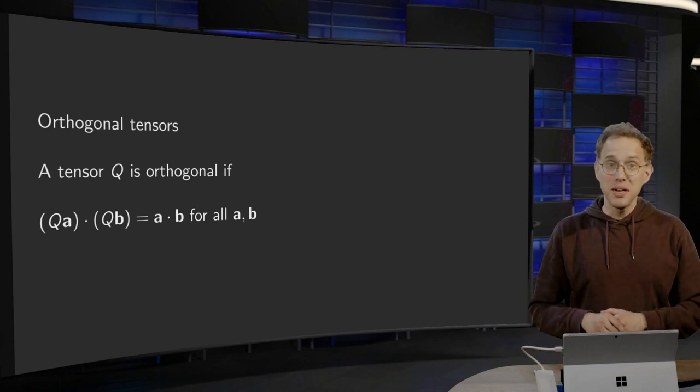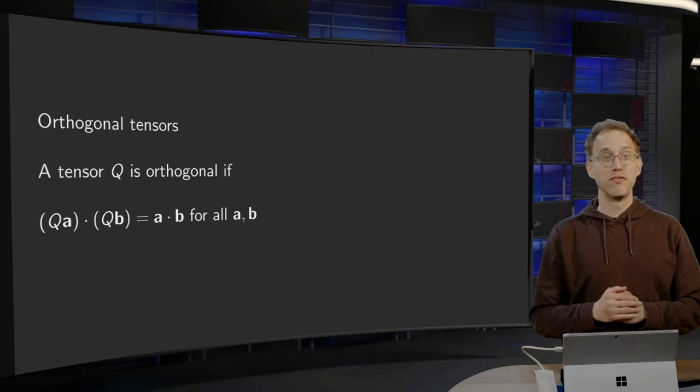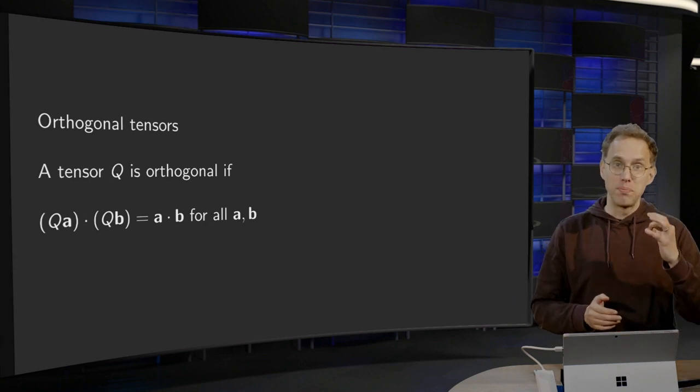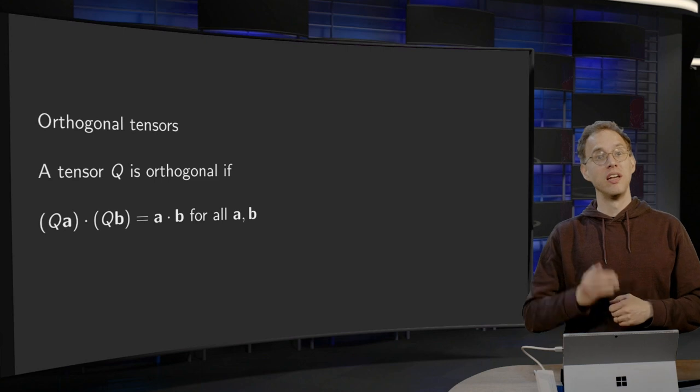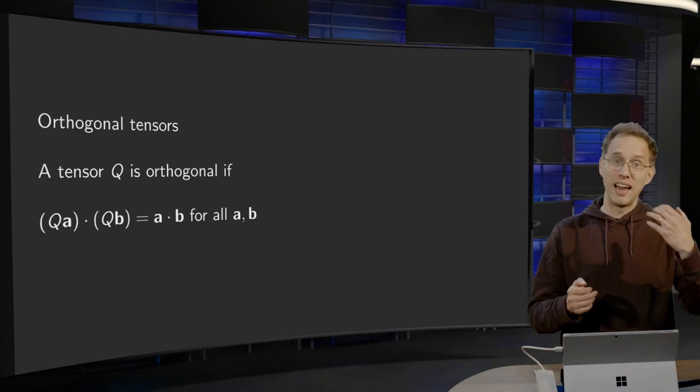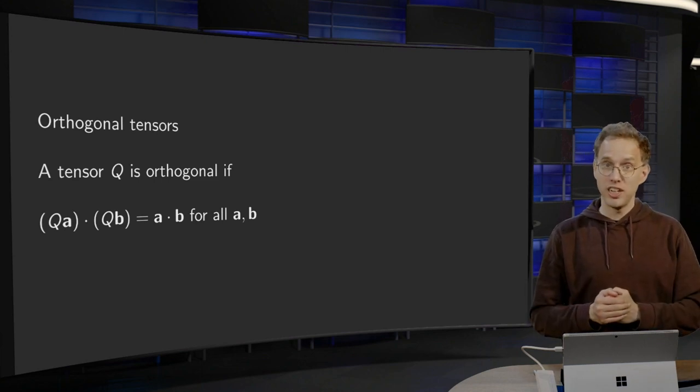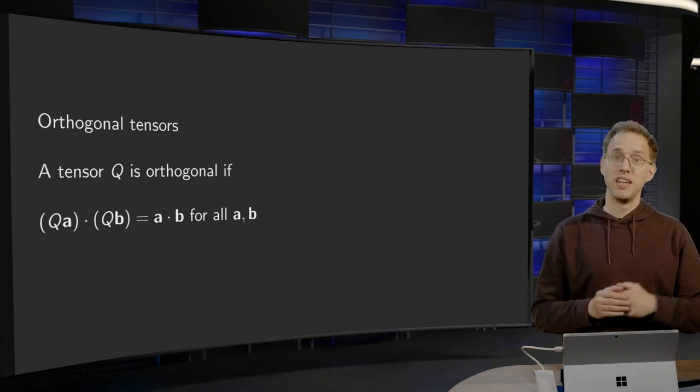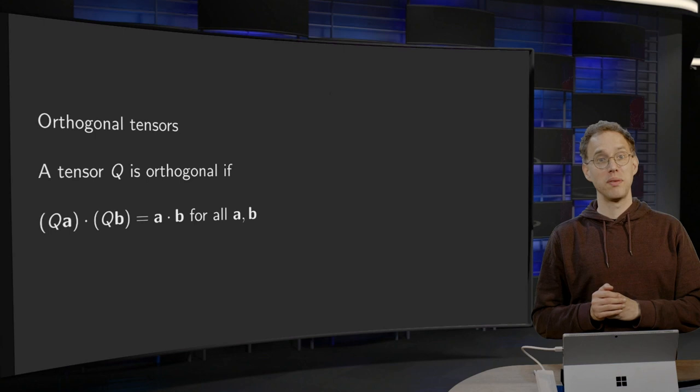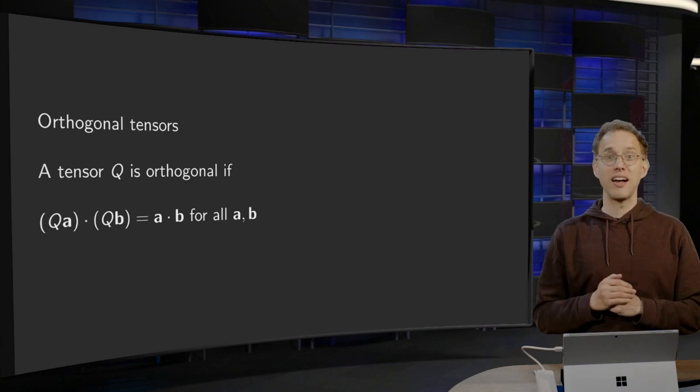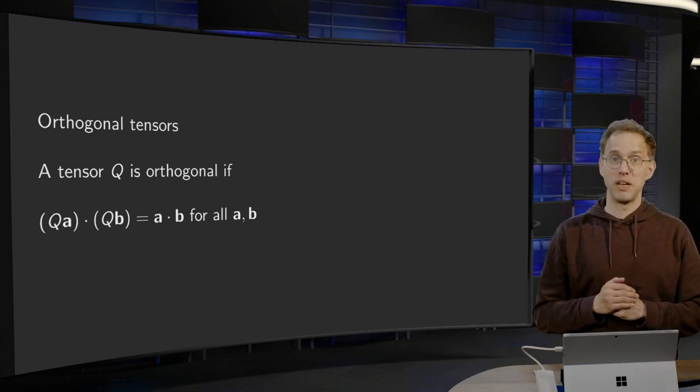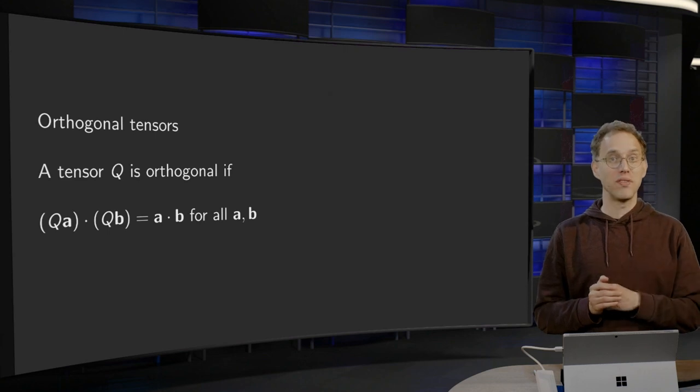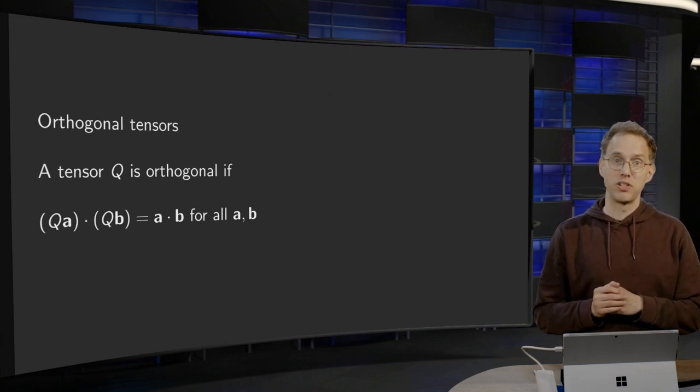Orthogonal tensors are extremely important in applications because they do not deform our vectors. They preserve the inner product, which means that lengths and angles are unchanged. After an orthogonal transformation, the length of any vector remains the same and the angle between any two vectors remains the same. This is why this class of tensors is very important.